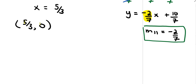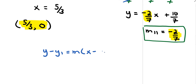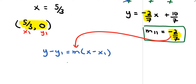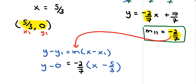Now I have the point 5 thirds comma 0 and the slope negative 2 over 7. Using the point-slope formula, with x1 equal to 5 thirds and y1 equal to 0, I plug in: negative 2 over 7 times the quantity x minus 5 over 3, with y minus 0 on the left-hand side.